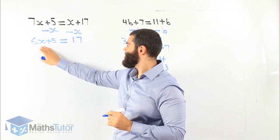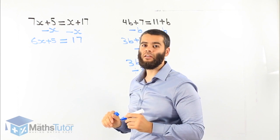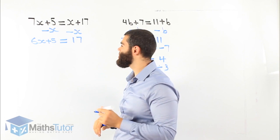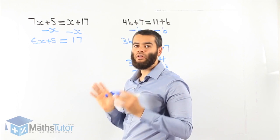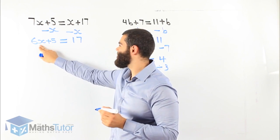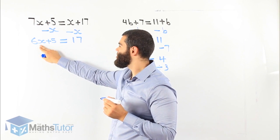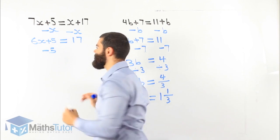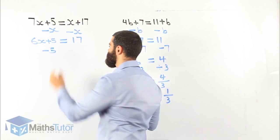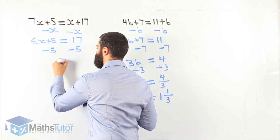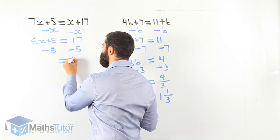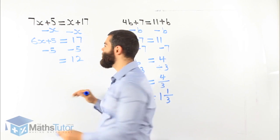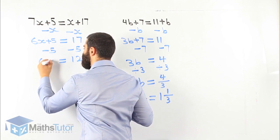Now we move on: 6x plus 5 equals 17. We want to leave x by itself. Which one do we start with — the 6 or the 5? The rule: we look for the furthest one away from x and start with that. 5 is furthest. Positive 5 becomes minus 5 — the opposite of plus is minus. Minus 5 on the other side too. 17 take away 5 is 12, and 5 take away 5 is gone. We're left with 6x equals 12.